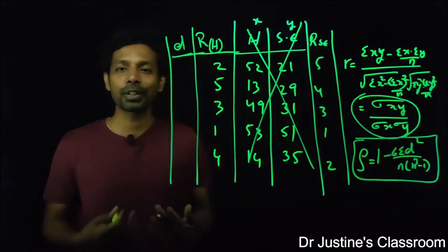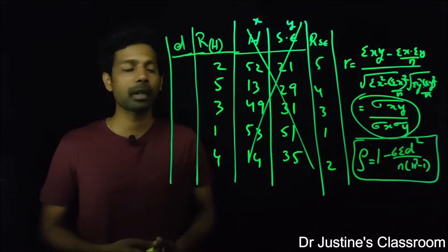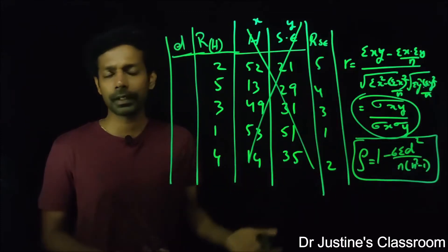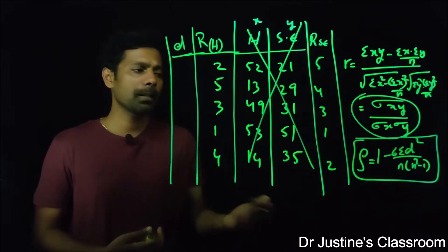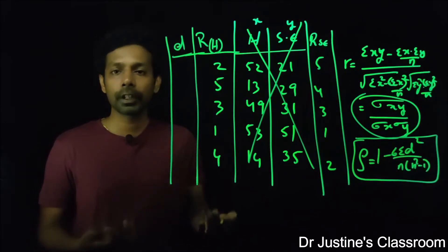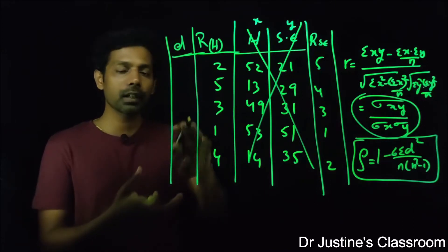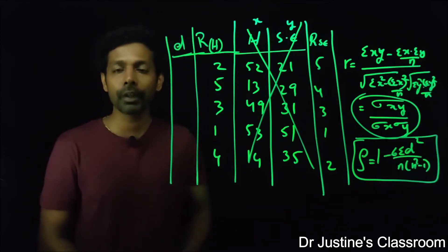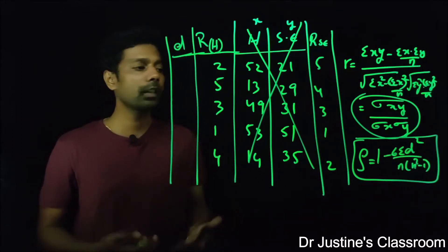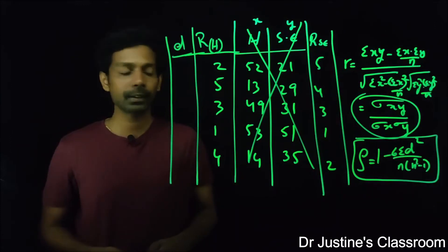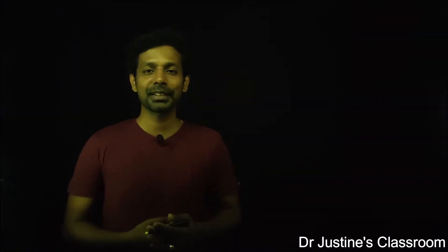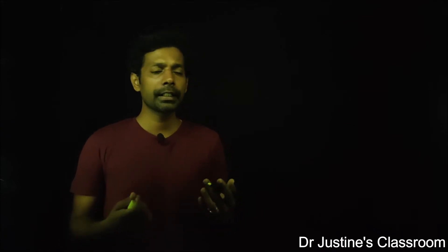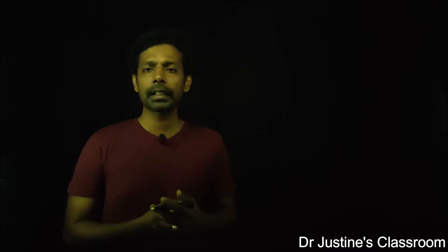Because this test does not use original parameters, it is called a non-parametric test. Tests that use original parameters are called parametric tests. In other non-parametric tests like the Mann-Whitney U test or Kruskal-Wallis, we similarly convert values to a rank format and use those ranks to make conclusions.